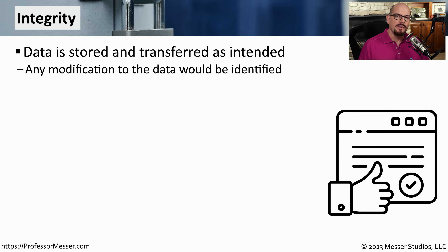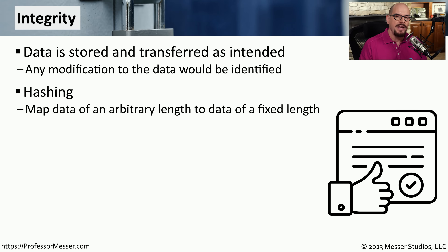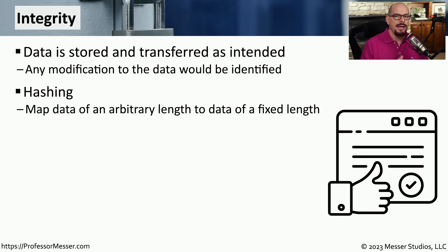When we're receiving data from a third party, we'd like to verify that the data we have received is exactly the same data that was sent, and that nobody has made changes to it while it was traversing the network. One way to provide integrity is by hashing. The person sending the data will create a hash of the data and send you both the data and the hash. When you receive the data, you'll perform the same hashing function, and if your hash matches the sender's hash, you know the data received is exactly the same as what was sent.